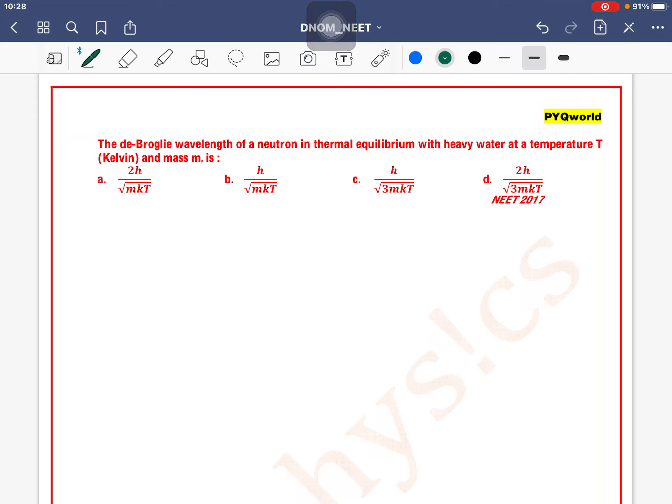The de Broglie wavelength of a neutron in thermal equilibrium with heavy water at a temperature T and mass m. We know that wavelength of a particle can be written as lambda equals h divided by the square root of 2 times mass times kinetic energy of that particular particle.